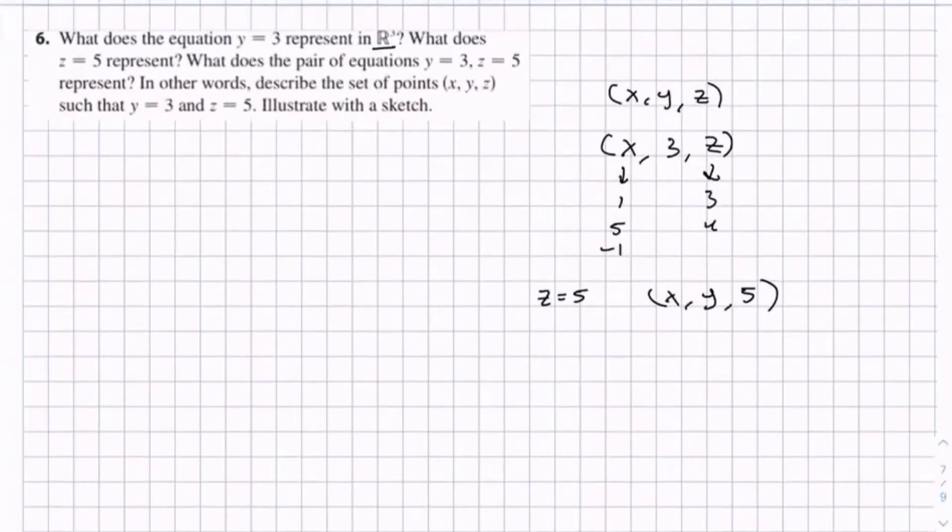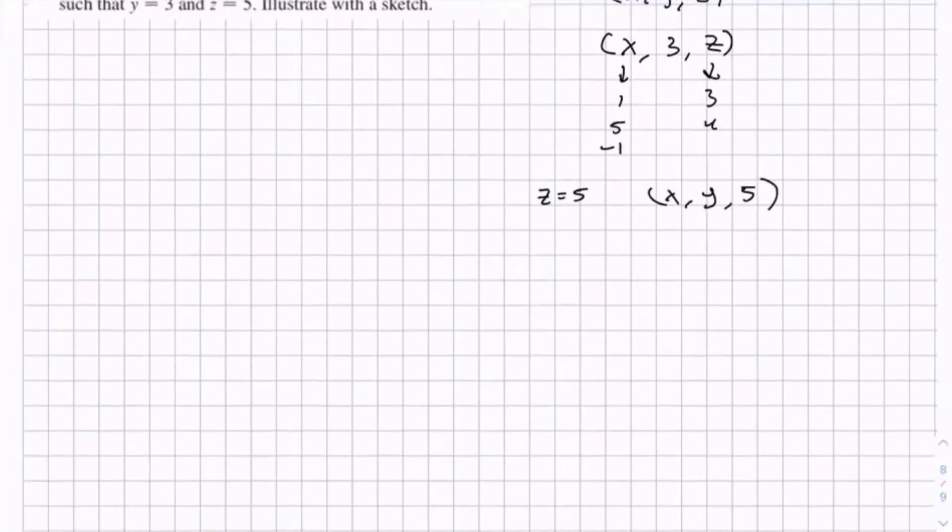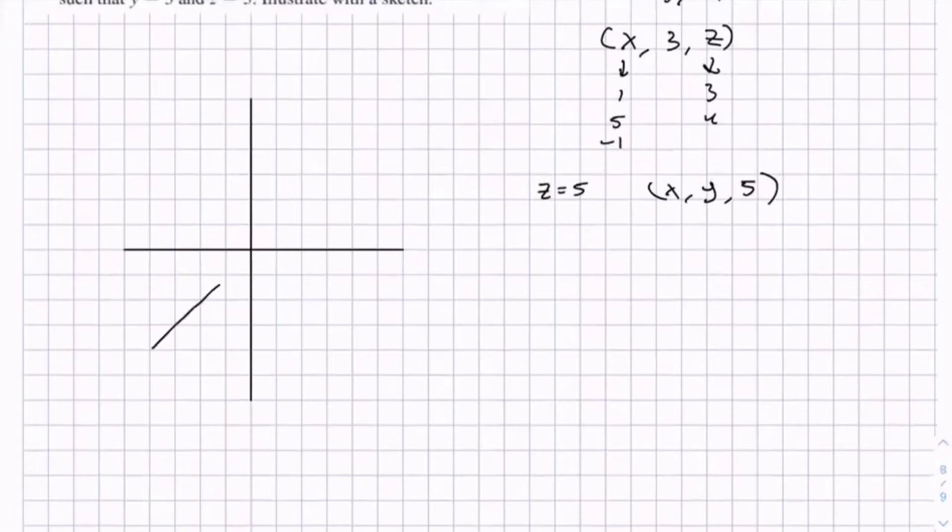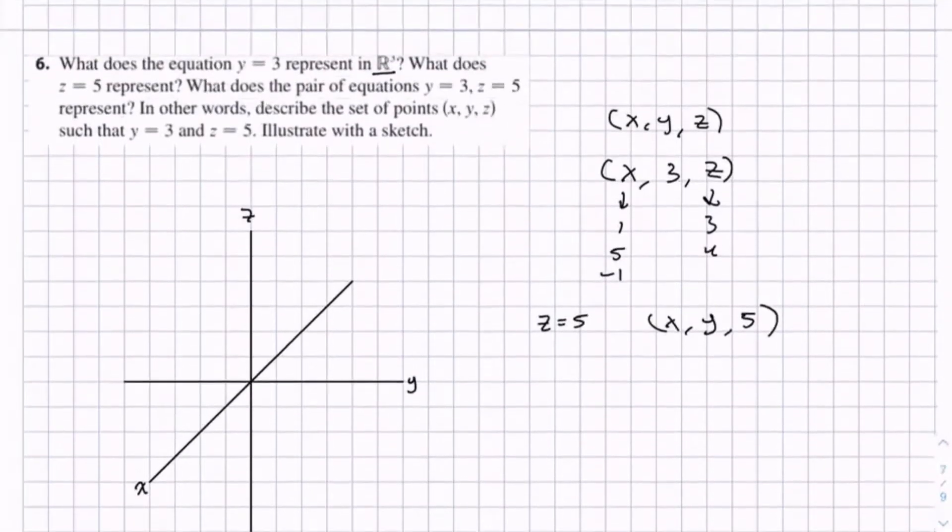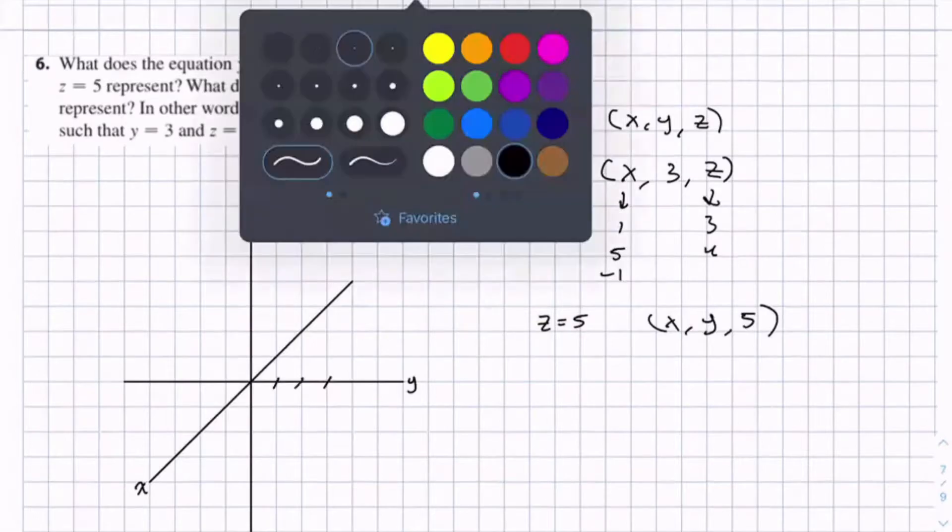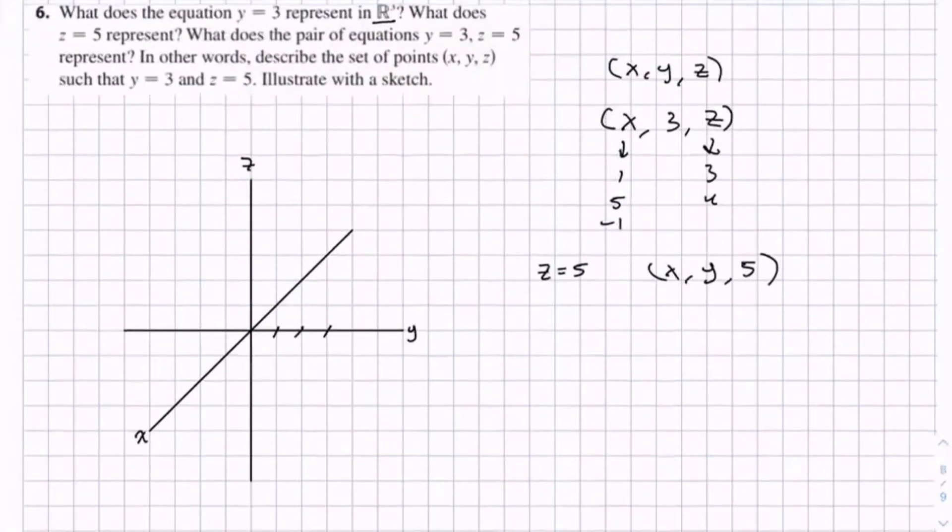And so let's illustrate this with a sketch. So first we can draw the z-axis, the y, the x. Let's label these. So first let's sketch y equals 3. So in the x, y plane it creates a line.